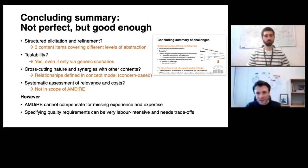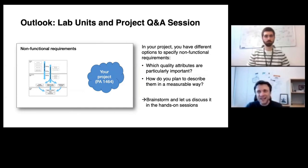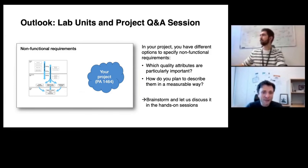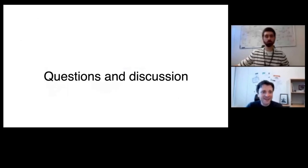My proposal is to apply it yourself: consider your project, think about what quality attributes might be really critical, decide on one or maybe two, and think about how you plan to describe them in a measurable way. Brainstorm and bring this to the hands-on sessions so we can discuss them together. And with this, I would like to conclude today's lecture. Thank you very much for your patience — it is time for questions and discussion.